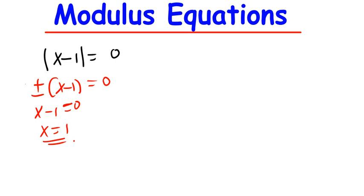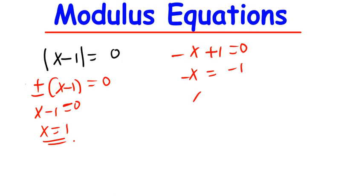Next, you multiply everything inside the brackets by negative, because we have got two things. So that becomes negative x plus 1 is equal to 0, so negative x equals negative 1, and if I divide both sides by negative, x is equal to 1. So you can clearly see that putting positive and negative still gives the same answer.